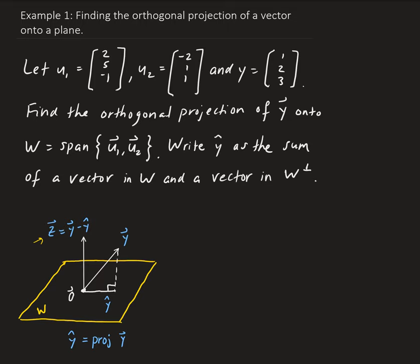From there, we want to write y-hat — that's the vector we get after projecting y onto W. We want to write it as a sum of a vector in W and a vector in the orthogonal complement of W, which is denoted W-perp.